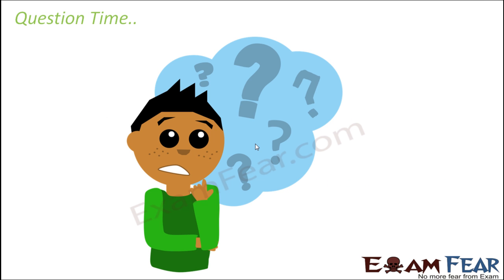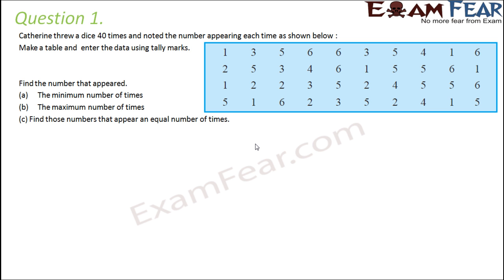Now based on whatever we have learned so far, let us quickly look at some questions. Question number one: Catherine threw a dice 40 times and noted the number appearing each time as shown below. Make a table and enter the data using tally marks.